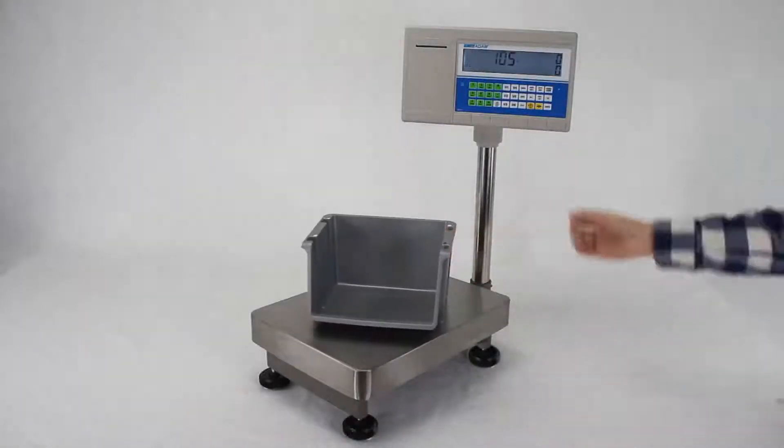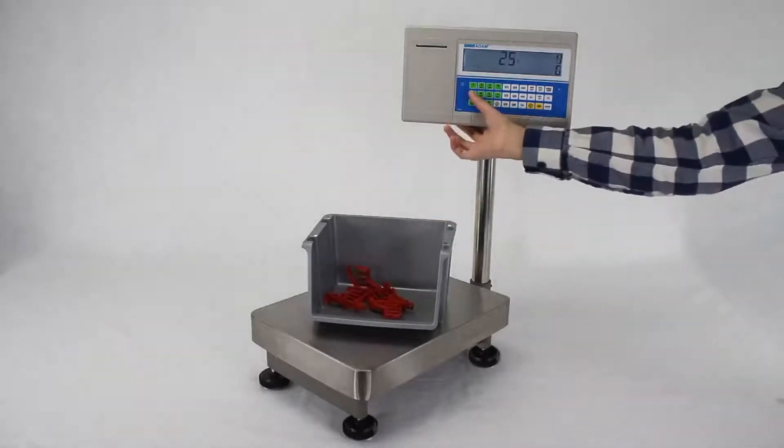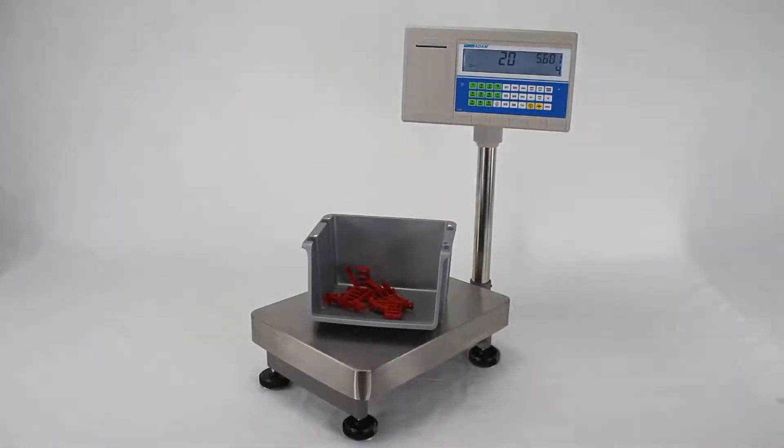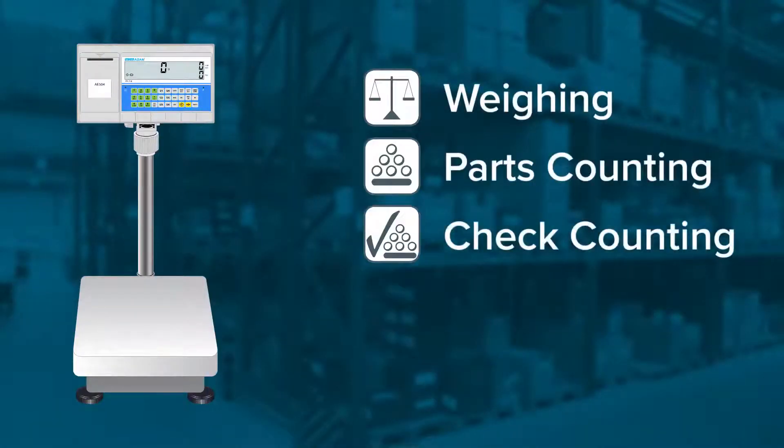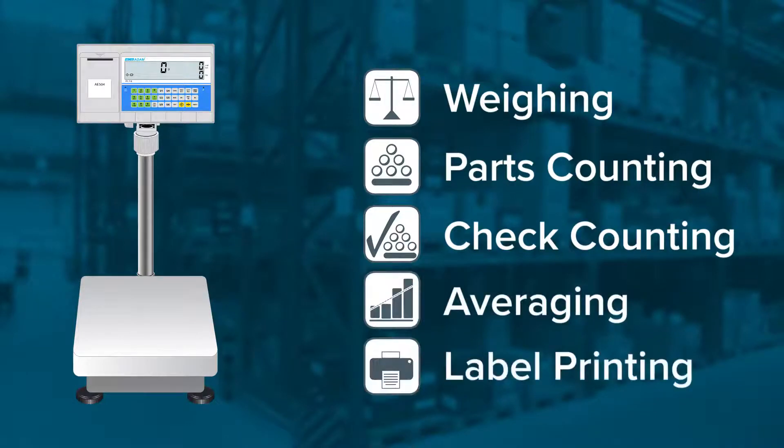The BCT range features six models with two pan sizes and is ideal for warehouse, food processing and production, manufacturing and outdoor applications such as weighing, parts counting, check counting, averaging and barcode label printing.